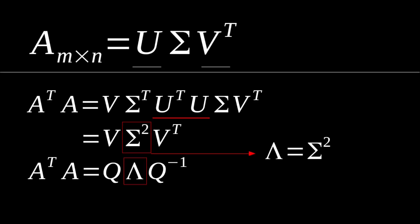And so what this gives us is our relationship between our eigenvalues and our singular values, telling us that the singular values are just going to be the square root of the eigenvalues based off of this relationship.